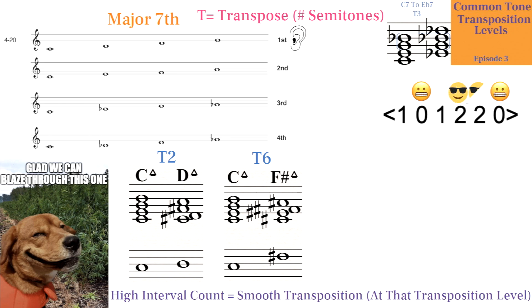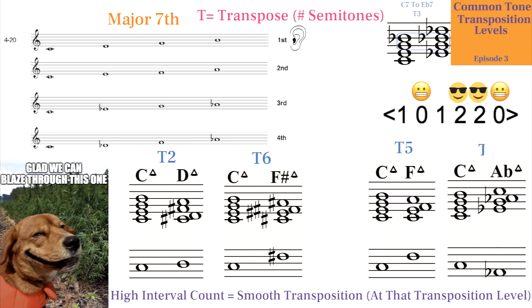The two major 3rds and two 4ths present in the set lend themselves to smooth transpositions at those transposition levels, which is why it's common to hear major 7th chords transposed a 4th or major 3rd away.